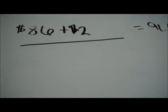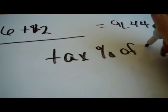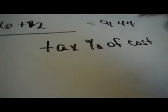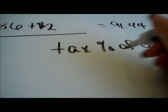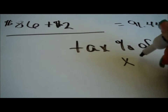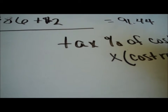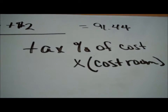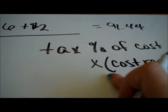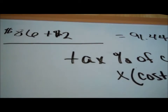How do we do tax? Tax is the percent of the cost. So we need to find something times the cost, and in this case it's the cost of the room. We're going to have to put x times the cost of the room into this equation.